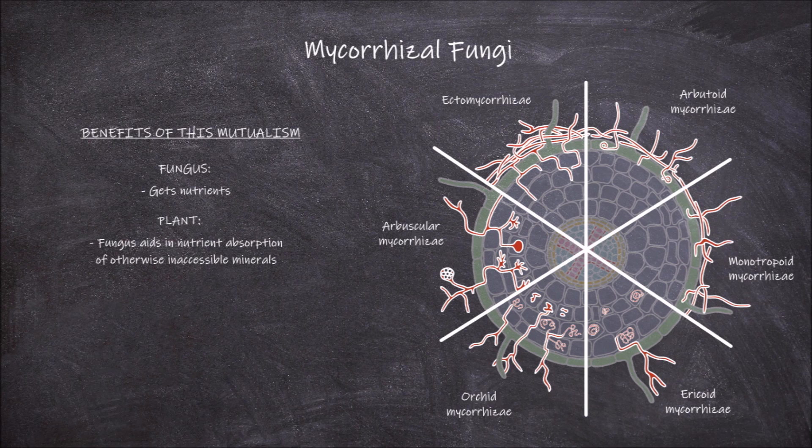These relationships also provide a benefit to the plant in the form of increased disease resistance. It also provides plants a level of resistance to harsh environmental conditions such as drought, high saline environments, and toxic soils.